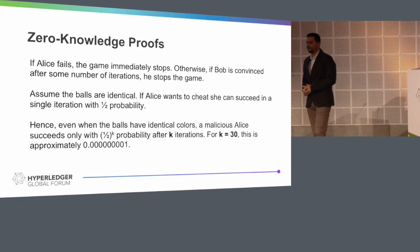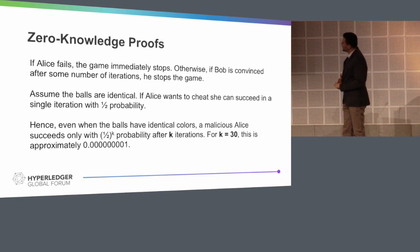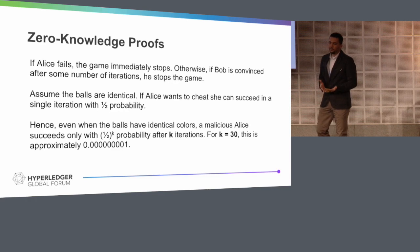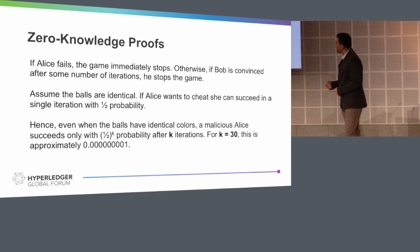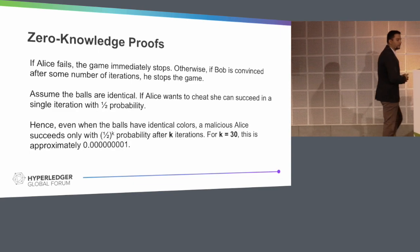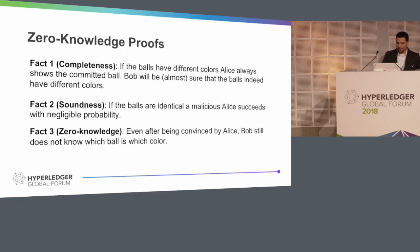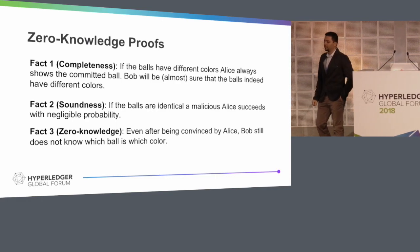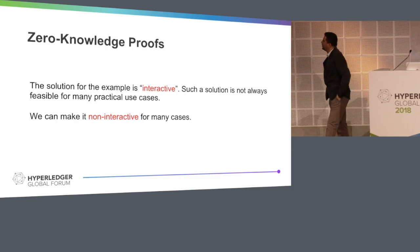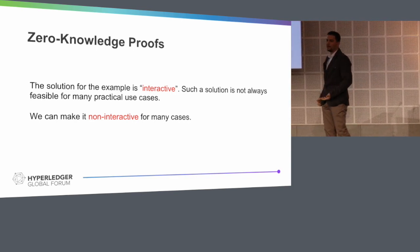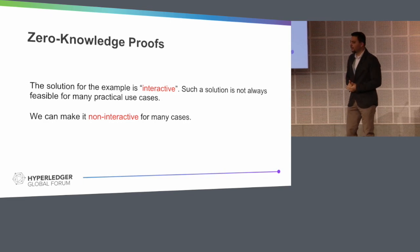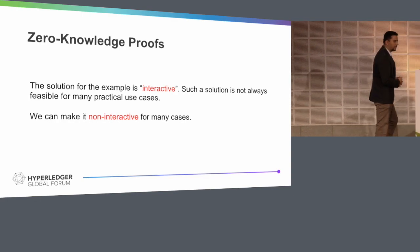Otherwise they keep going, and after some iterations, if Bob is convinced, he stops the game. If the balls are identical and Alice wants to cheat, she can succeed with one-over-two probability in a single iteration. However, if we increase the number of iterations — like after 30 iterations — that probability goes to a very, very small number. So it's really hard to cheat after some iterations. This simple game satisfies all those properties: completeness, soundness, and zero knowledge. However, the problem is it's interactive — both Alice and Bob need to take actions at each step — and such a solution might not always be feasible for real-life scenarios. We want to make this non-interactive in some way.